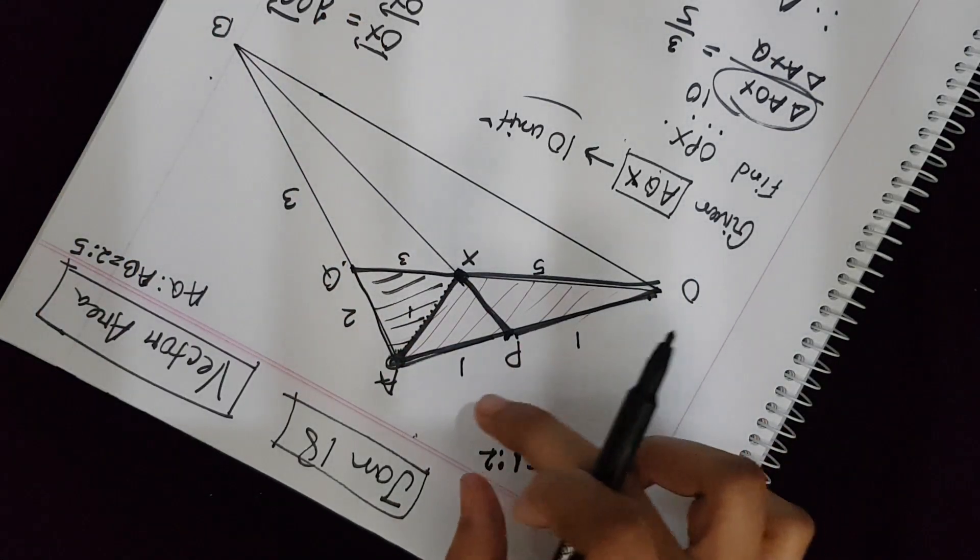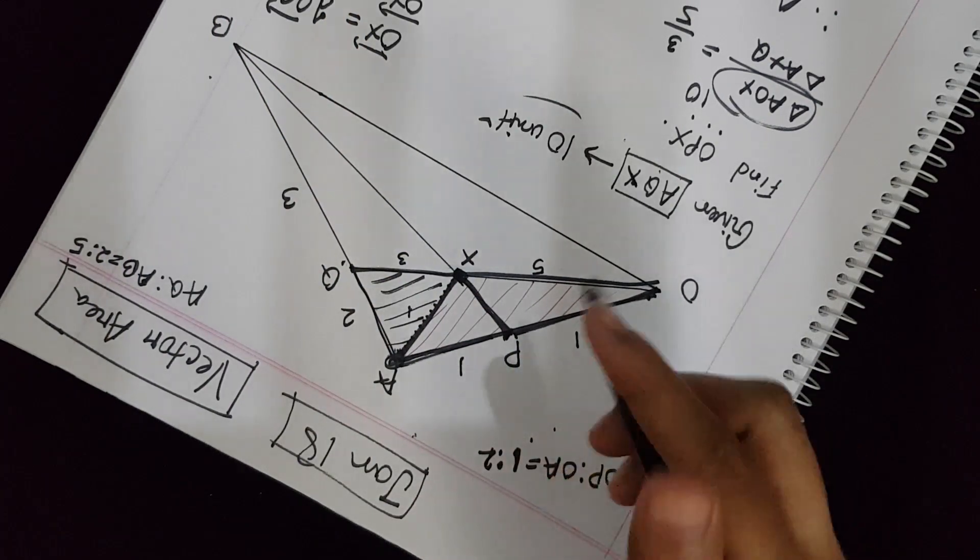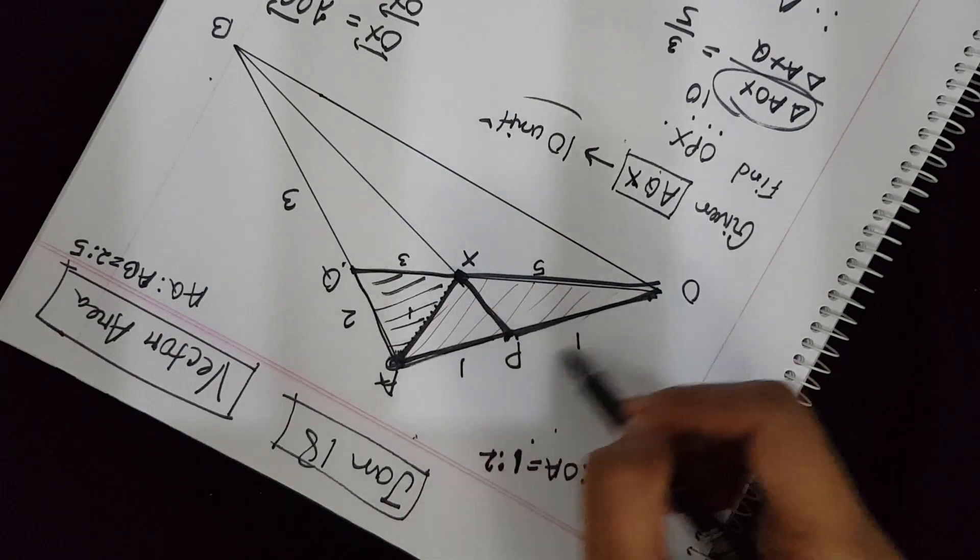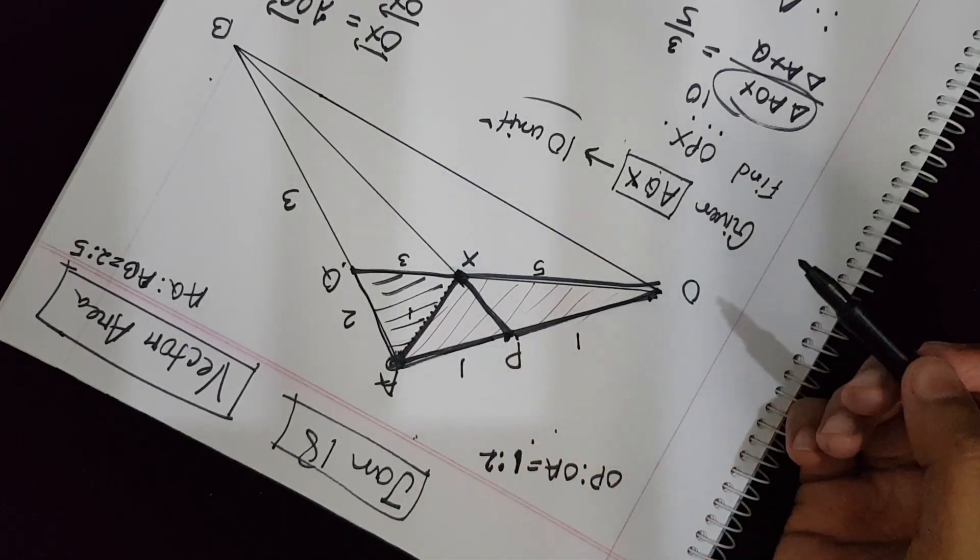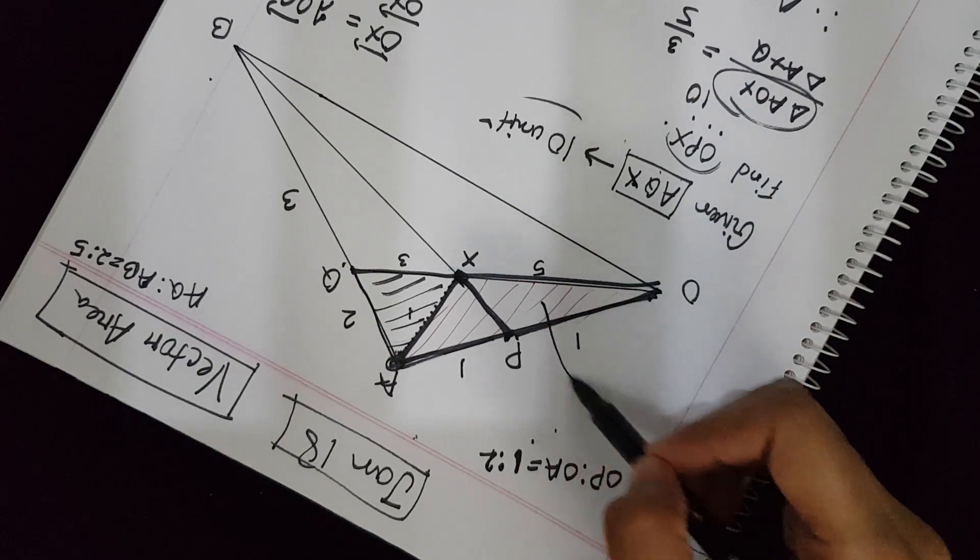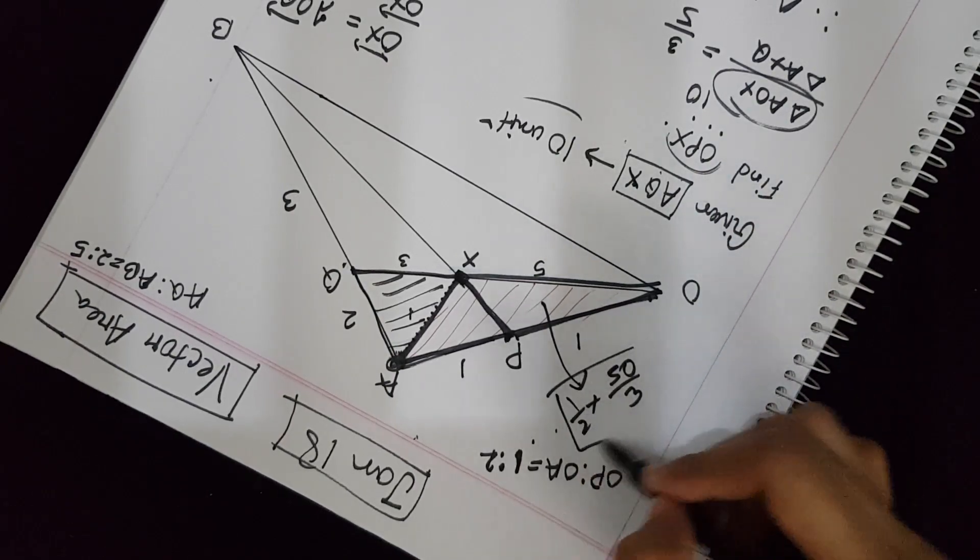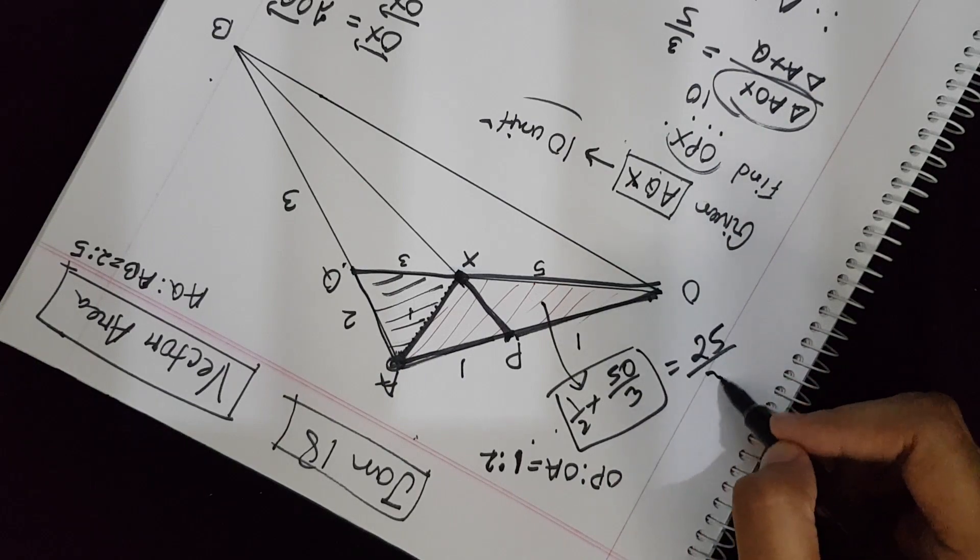And since P is the midpoint, the ratio is 1 to 1. That means these two triangles are equal. So the total area was 50 by 3. We have to find OPX only, so this will be half of 50 by 3. The answer is 25 by 3.